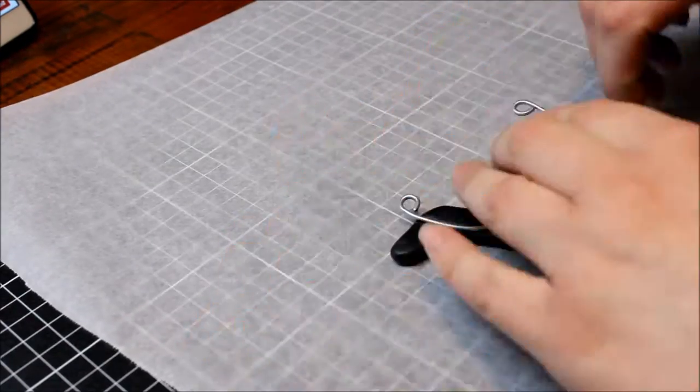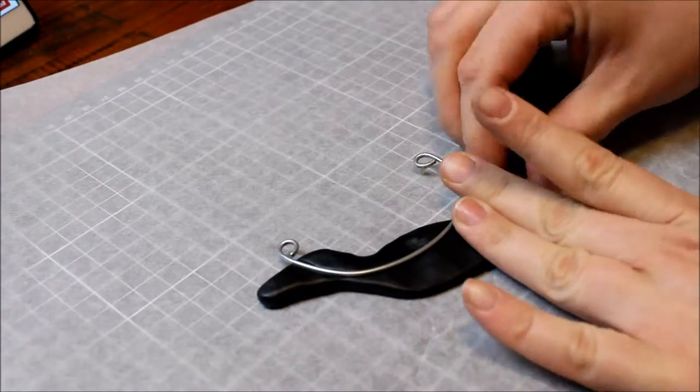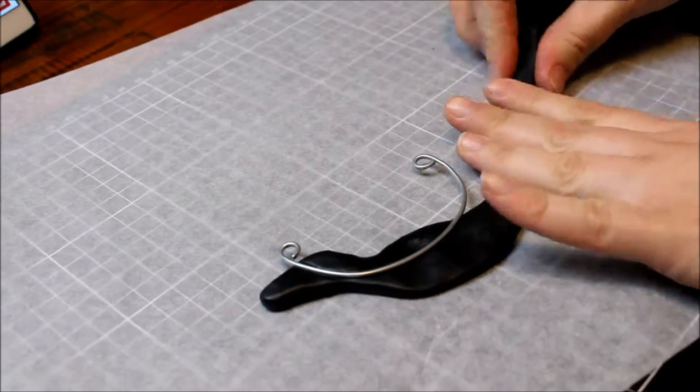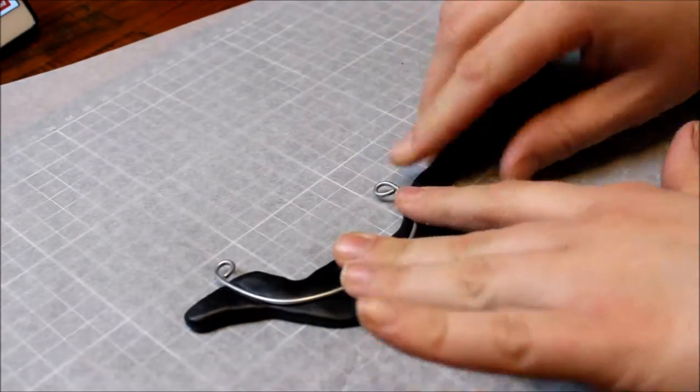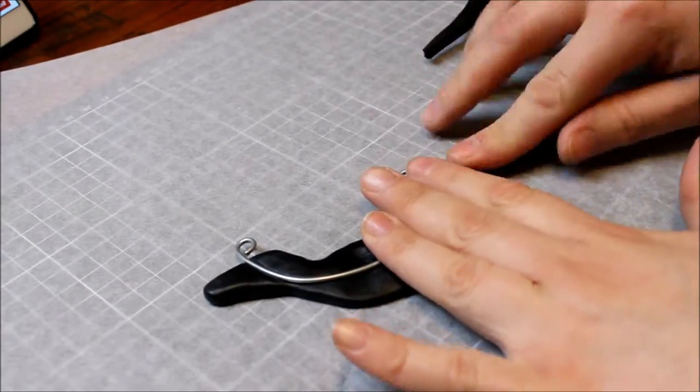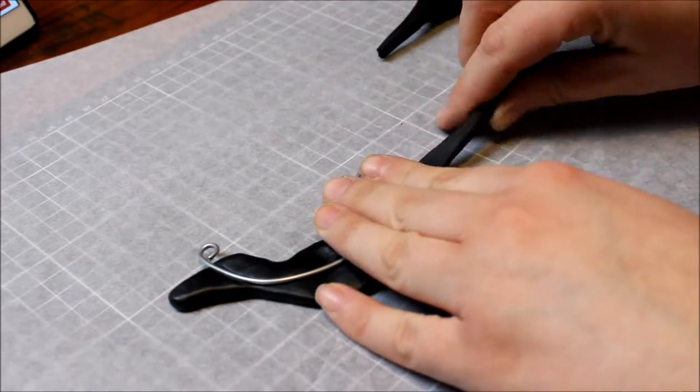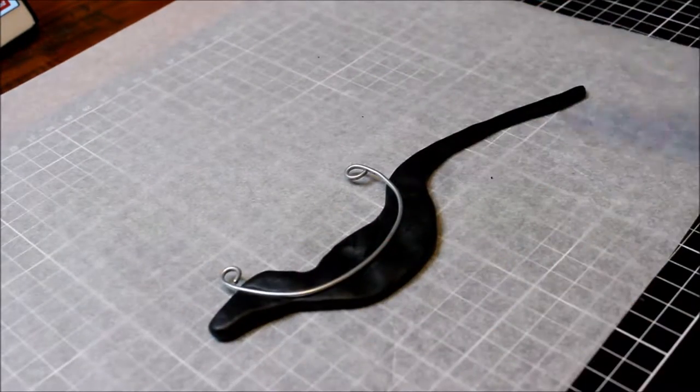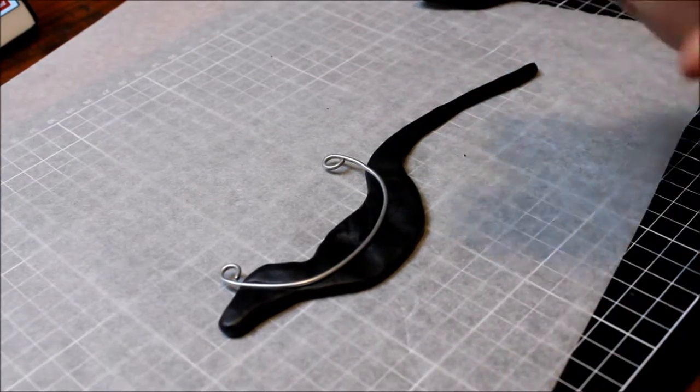This is going to be the back part of our dragon. We're going to build onto this wire so that the wire acts like a support system within the dragon. This is just a rough outline of the dragon's body shape.